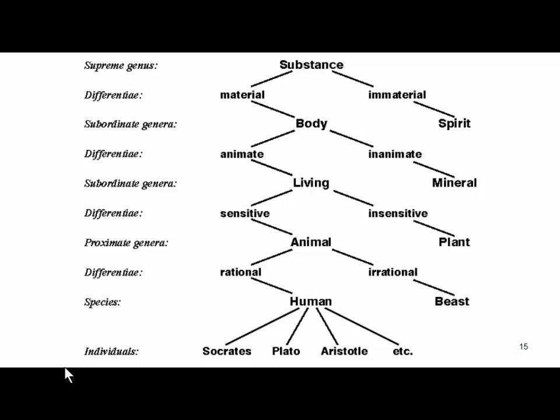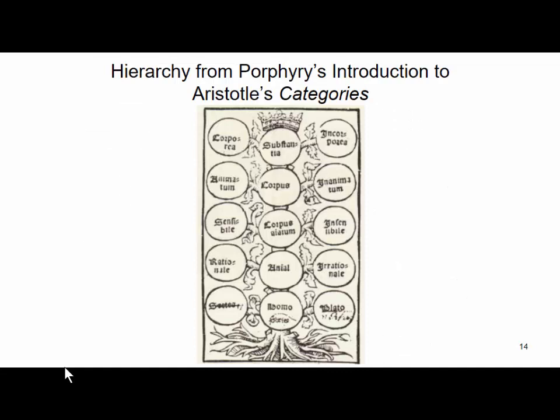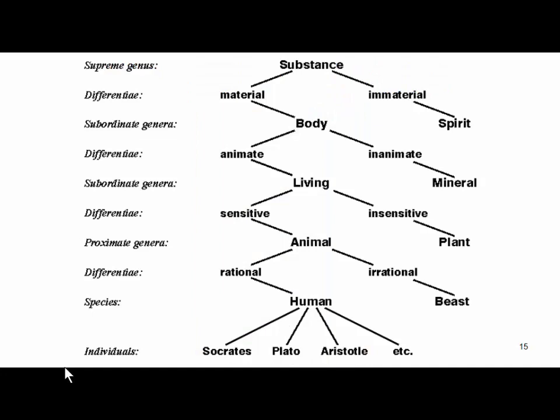Aristotle himself didn't do diagrams, but Porphyry created a diagram in his commentary on Aristotle's categories. This is the prototype for ontologies today, which are fundamentally graph hierarchies.